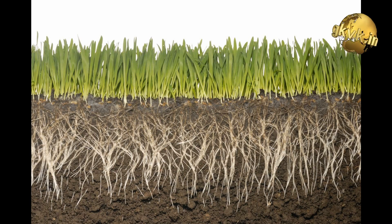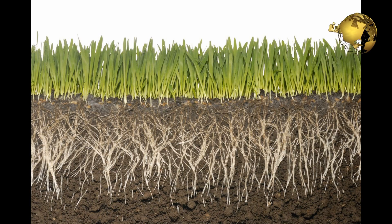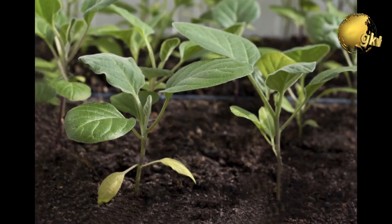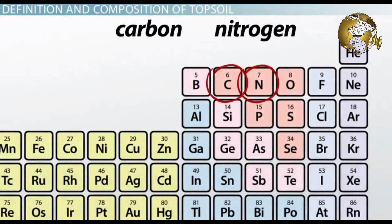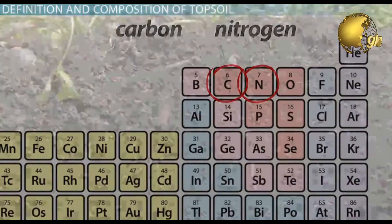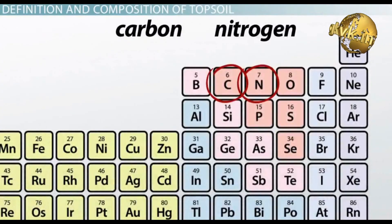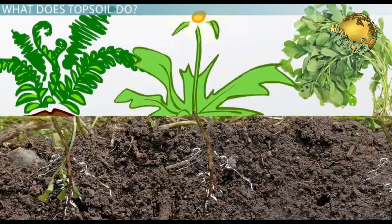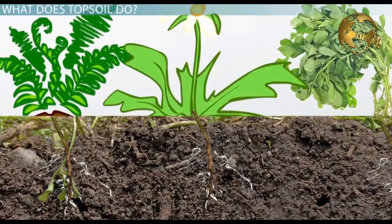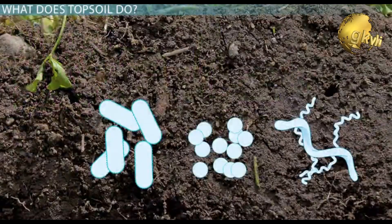So what does topsoil do? Most importantly, topsoil provides nutrients to growing plants. This is because this region of the soil does the main biological nutrient cycling, providing the needed carbon and nitrogen molecules for plants to grow. Topsoil is the home to a diverse community of microorganisms that do this recycling.